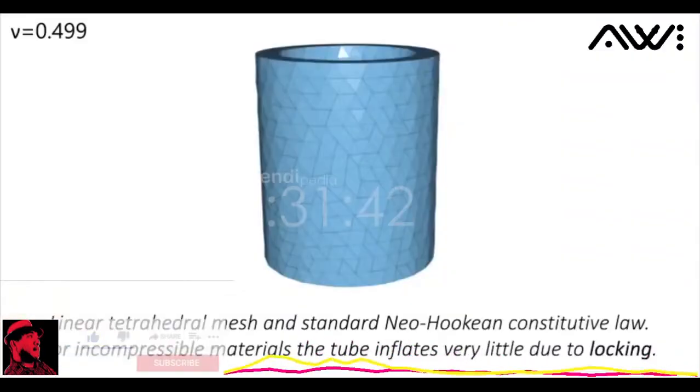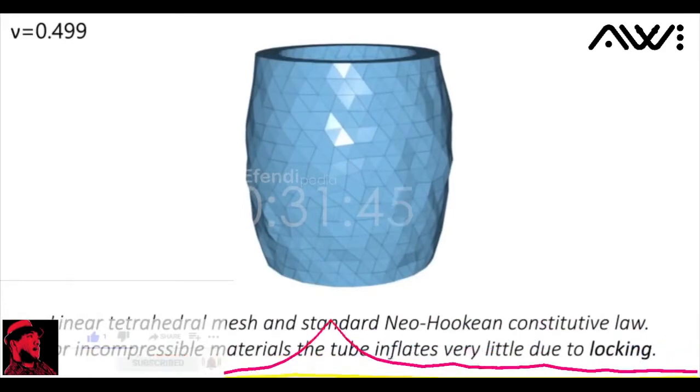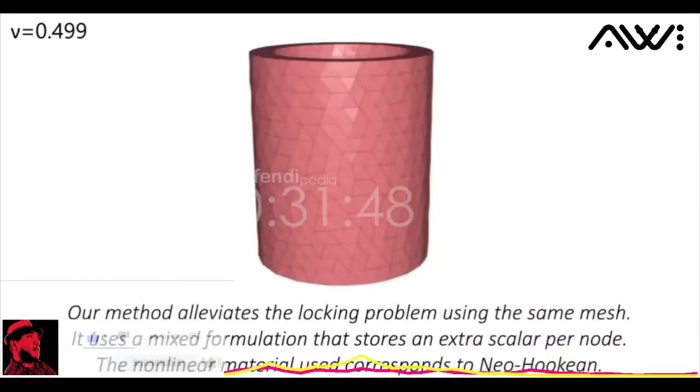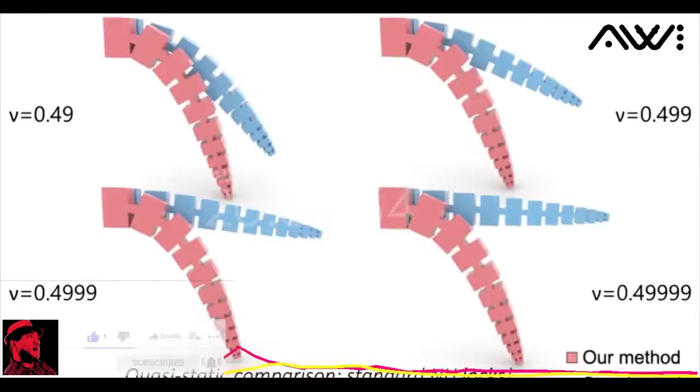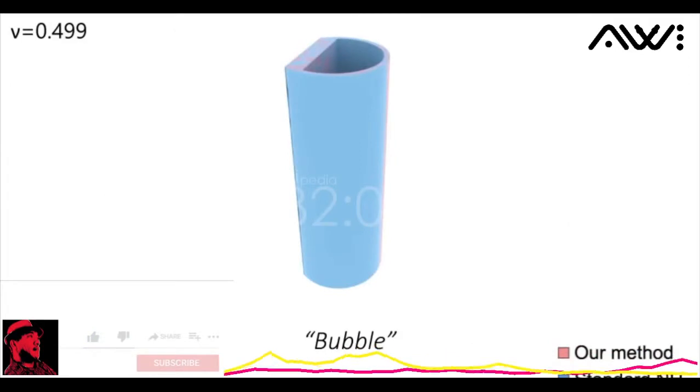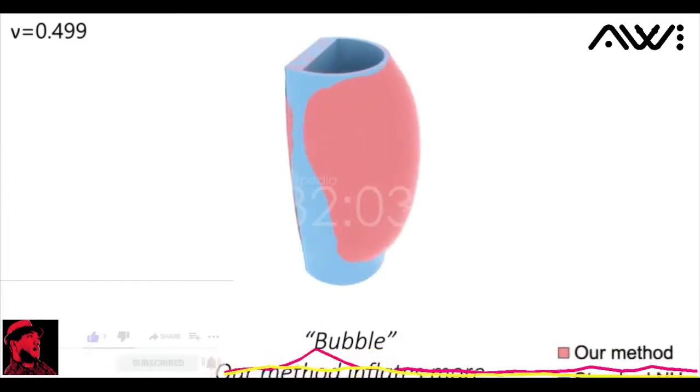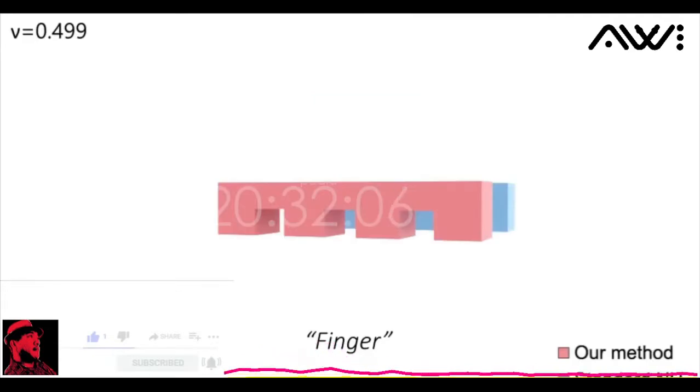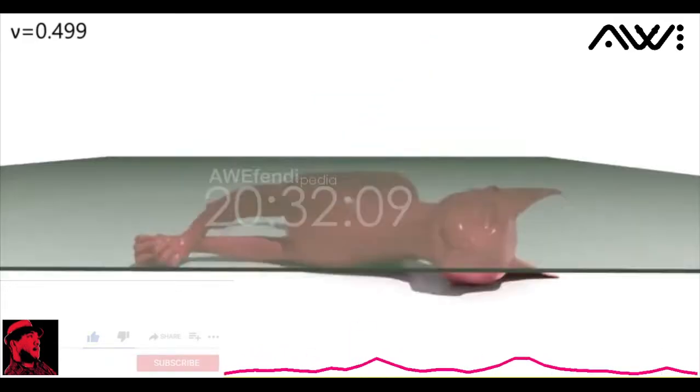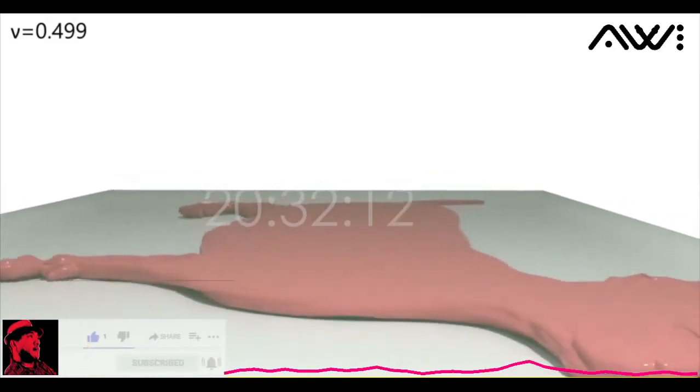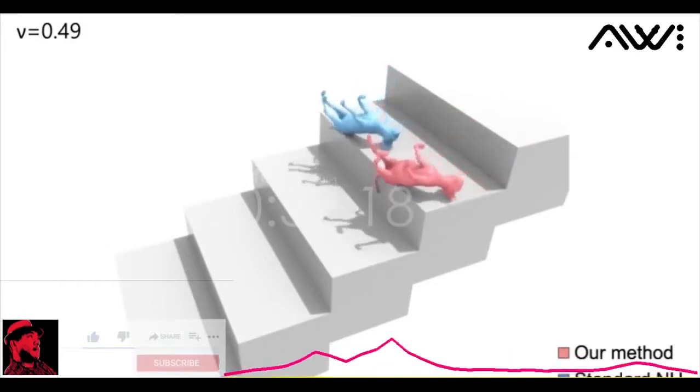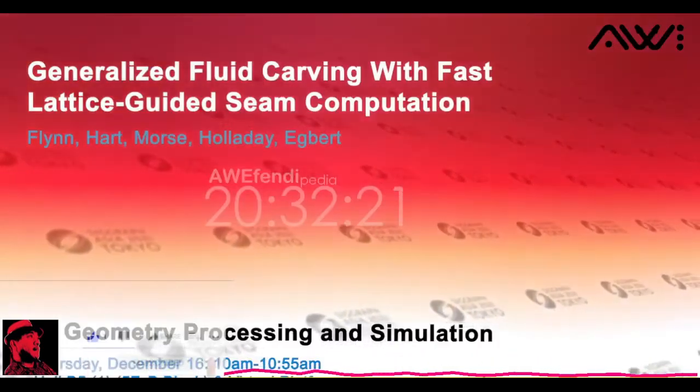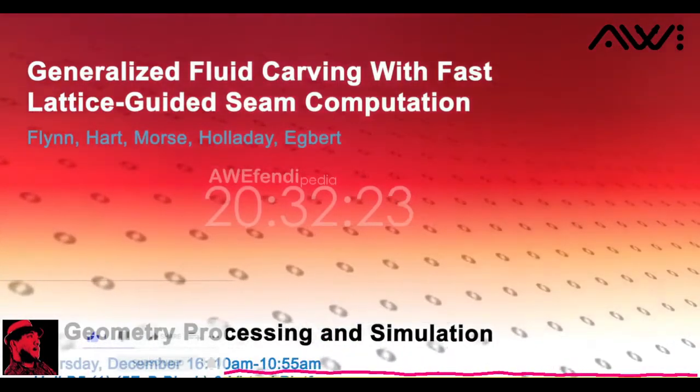Inflating a tube using standard FEM and a Poisson ratio always leads to locking. With mixed FEM, we can alleviate the problem using the same tetrahedral mesh. We employ linear shape functions for both displacements and the pressures. For this cantilever beam, standard FEM completely locks. Our method allows us to more accurately simulate soft robots made of silicon rubber, which is modeled as a fully incompressible neo-Hookean material. Or we can squash a cat, or even push it down the stairs.